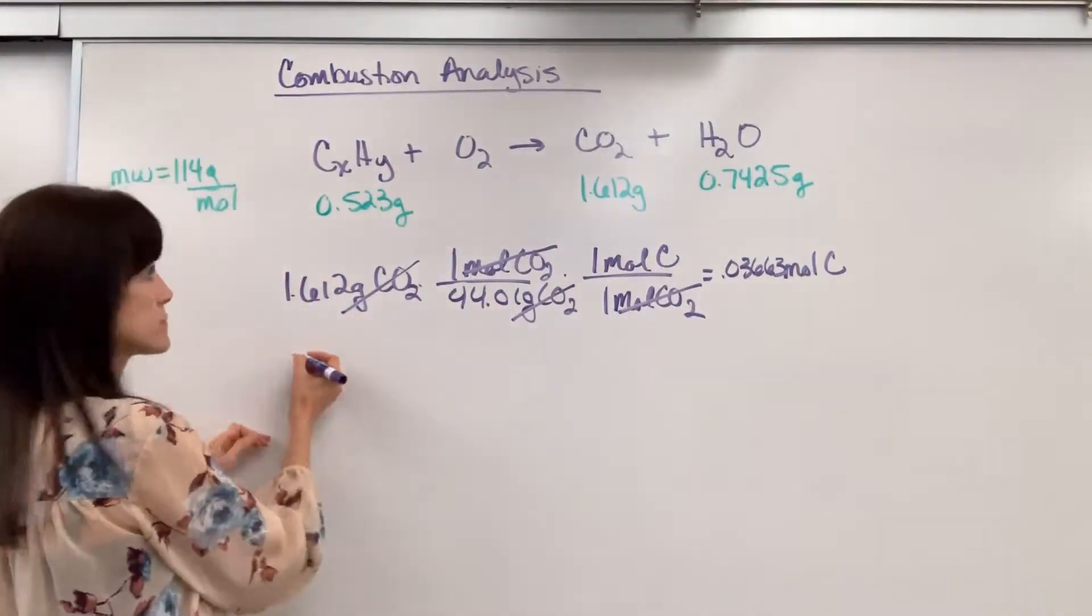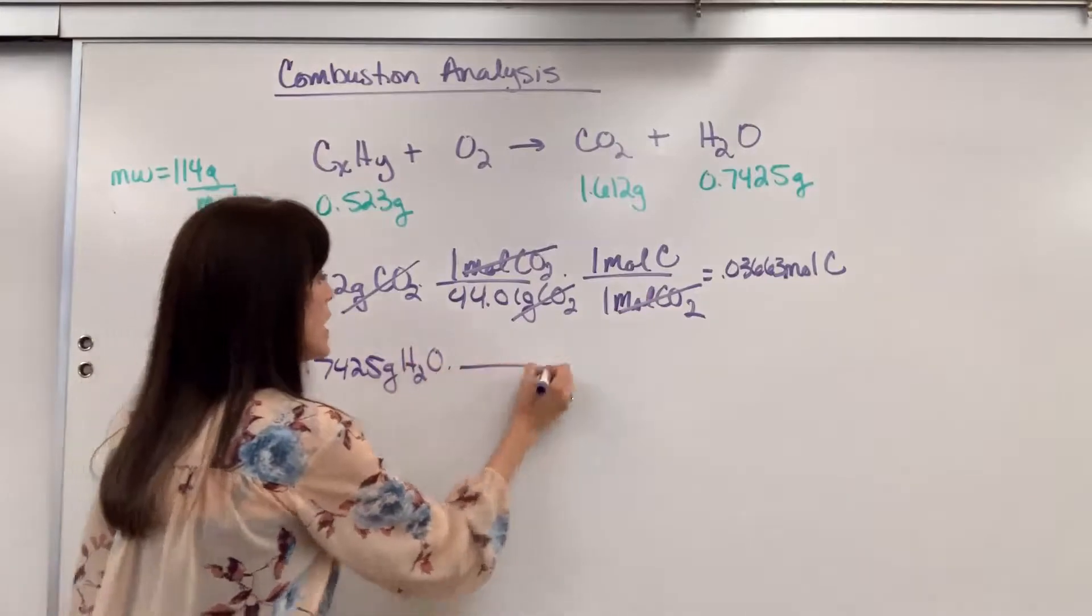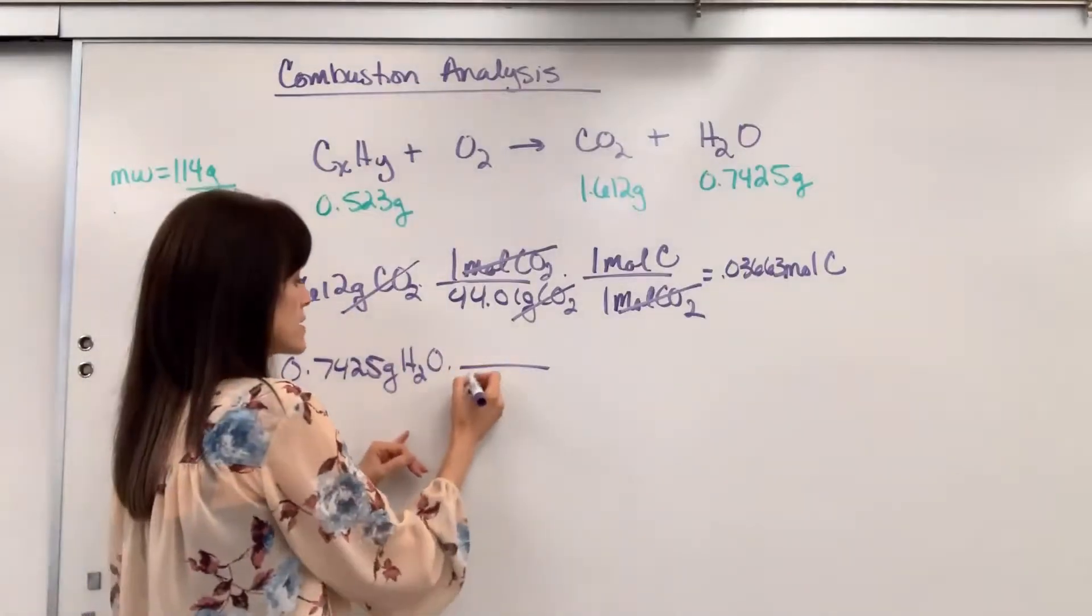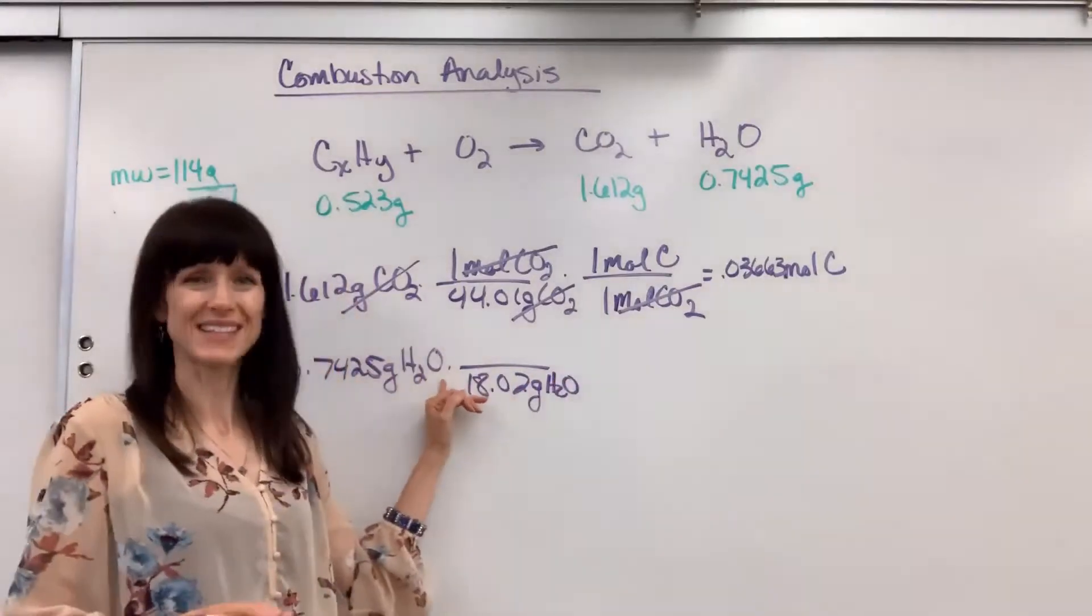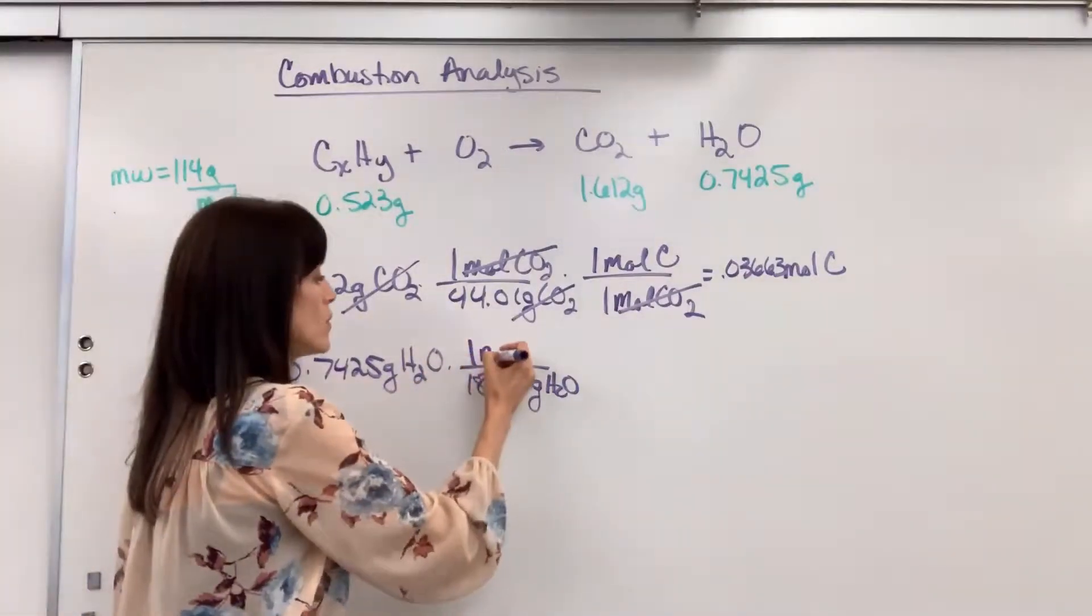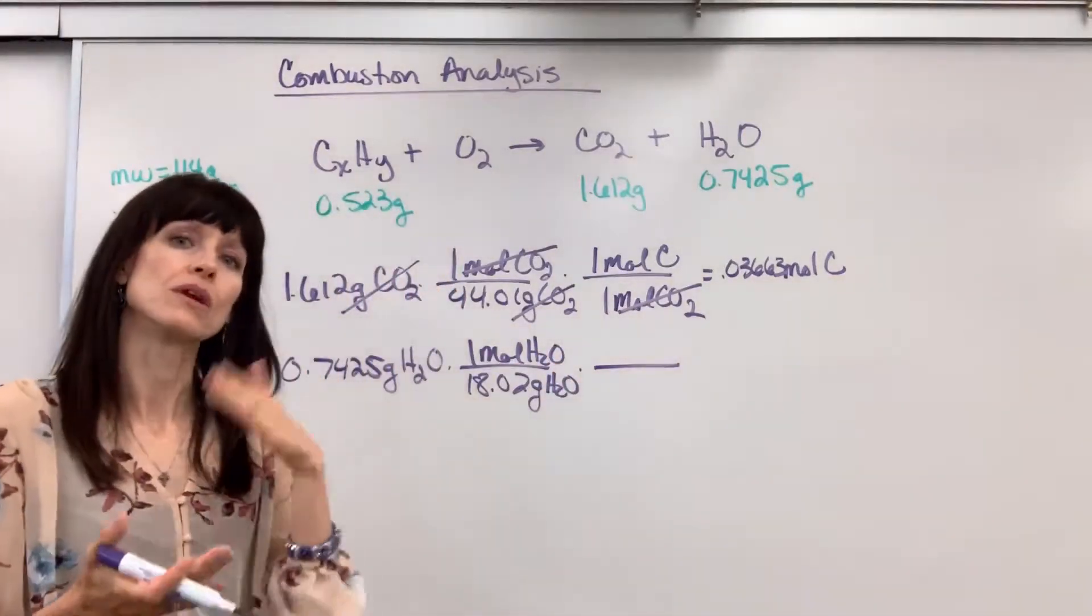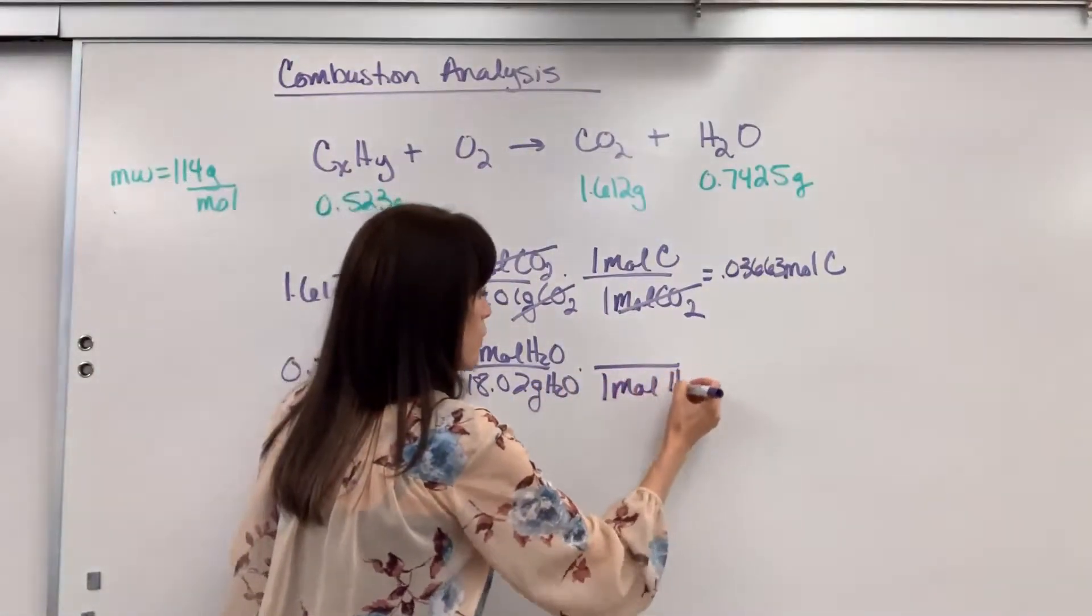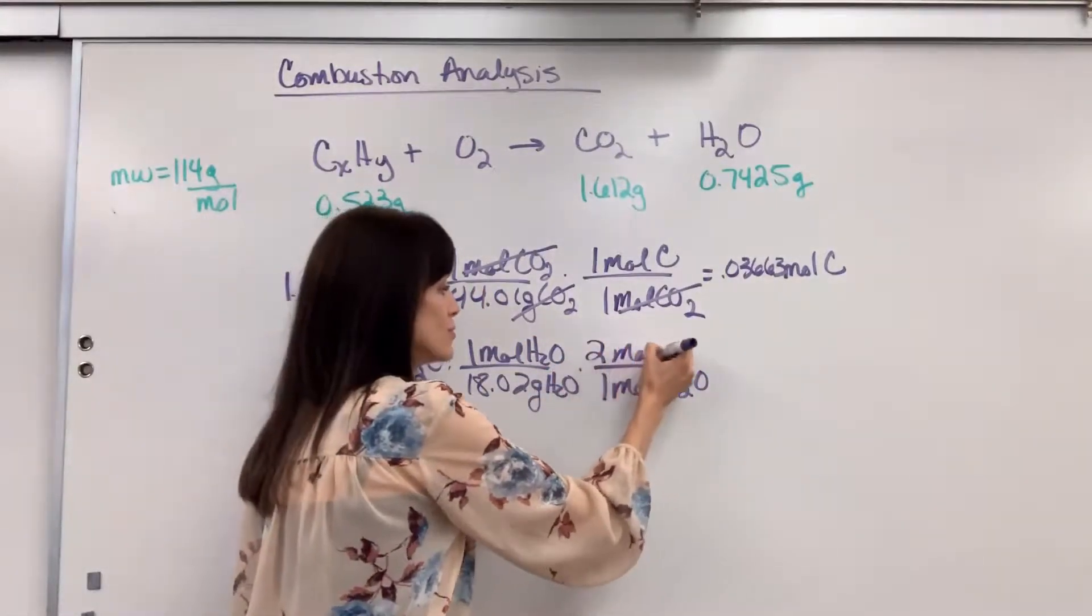Now let's do the hydrogen. We had 0.7425 grams of water, and I want the moles of hydrogen. So let's go from grams to moles. The molar mass of water is 18.02 grams. One oxygen is 16, one hydrogen is 1.01, multiply that by two, add the 16, 18.02. One mole of hydrogen, that's the mass.